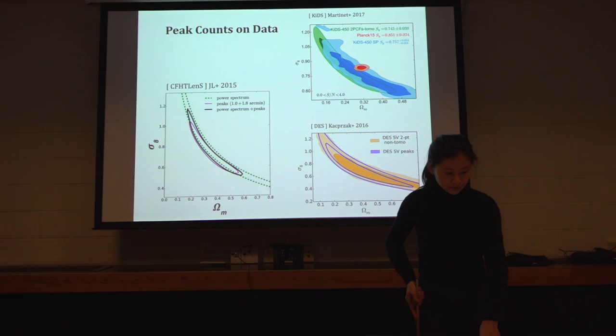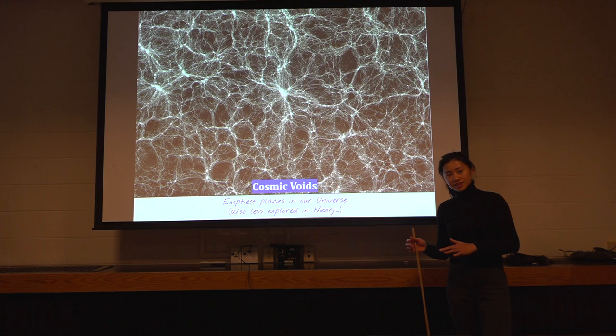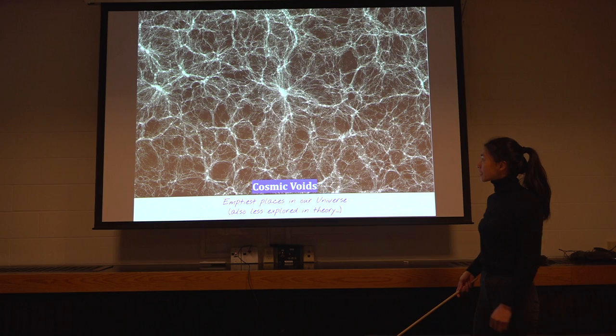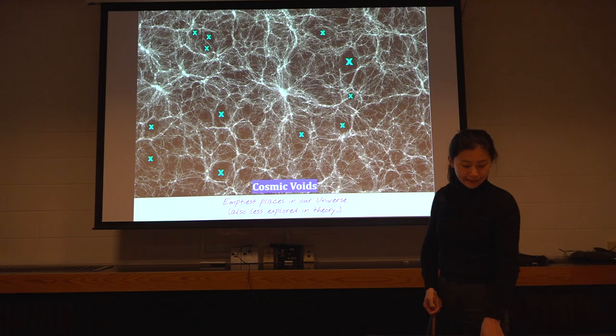Okay, we talked about peaks, the most over dense regions in our universe. The natural thing to think about are the opposite. Now, the voids. So this is the last result I want to mention about cosmic voids. So they are not new, but they are less investigated in this field right now. So very simple. Cosmic voids are just this under dense regions in our universe. Okay, and then we want to see how neutrinos change them.